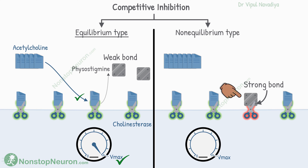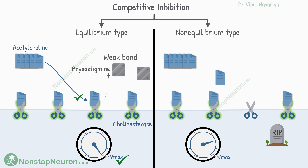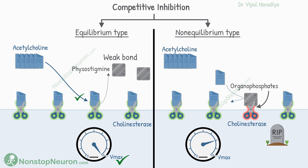However, if the drug makes a strong covalent bond, the substrate cannot displace it even at higher concentrations. The enzymes bound to the drug are lost forever. As these enzymes can never contribute to activity, the maximum rate of reaction cannot be achieved — Vmax is decreased. Vmax is usually restored only after the synthesis of fresh enzymes, which takes time. This is called non-equilibrium-type inhibition. For example, inhibition of cholinesterase by organophosphates is of non-equilibrium type — normal cholinesterase activity is restored only after synthesis of new enzymes.